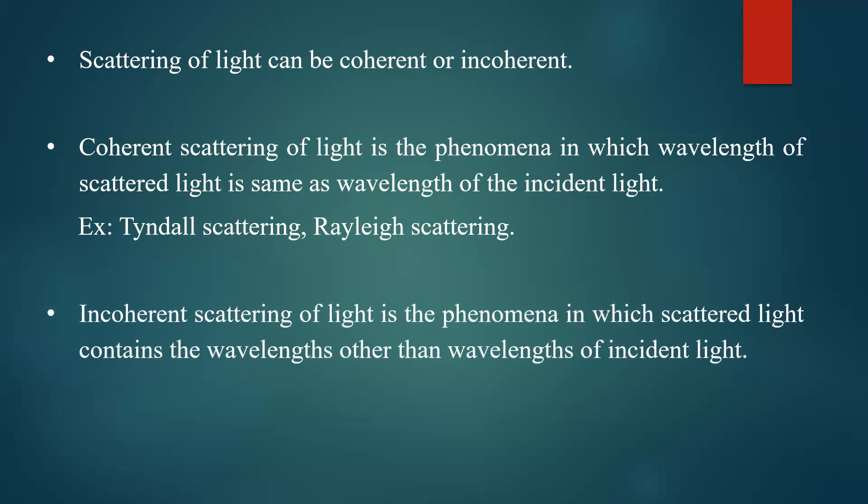On the other hand, incoherent scattering of light is the phenomenon in which the scattered light contains wavelengths other than the wavelengths of the incident light — the wavelength of light changes after scattering. You can observe different wavelengths other than the incident wavelength. The famous example for incoherent scattering is the Raman effect, or Raman scattering, in which the scattered light contains wavelengths other than the incident light.